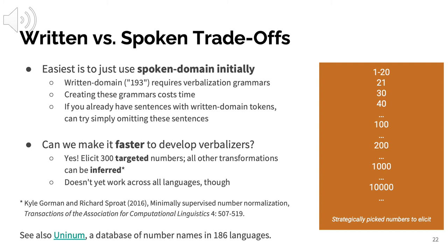A lot of work has gone into making it faster to develop verbalizers. Colleagues Kyle Gorman and Richard Sproat have worked on methods where you elicit 300 targeted numbers and can infer all the different transformations needed. You strategically pick the numbers — all numbers from one through twenty, then twenty-one, but not twenty-two, since that follows consistently. Then thirty, forty, and so on. This way you get a kind of minimally supervised number normalization. A database of number names in 186 languages has been published for this purpose.